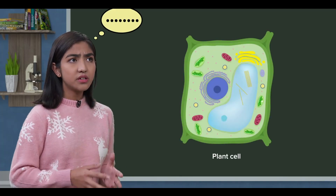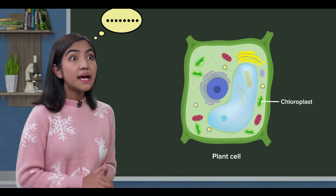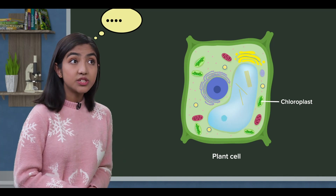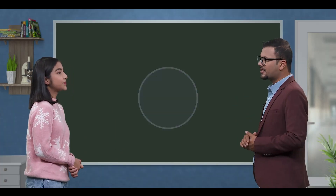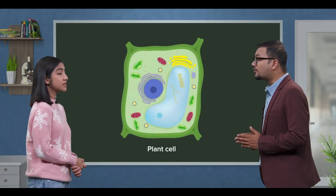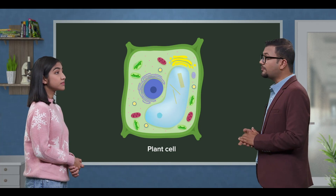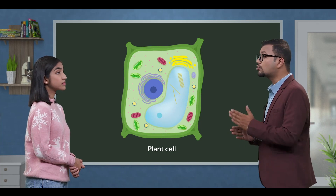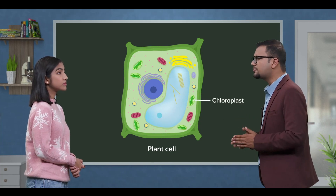Plants in the cell are green due to chloroplasts. There are different types of plastids in chloroplasts, and natural greenery is provided by them.